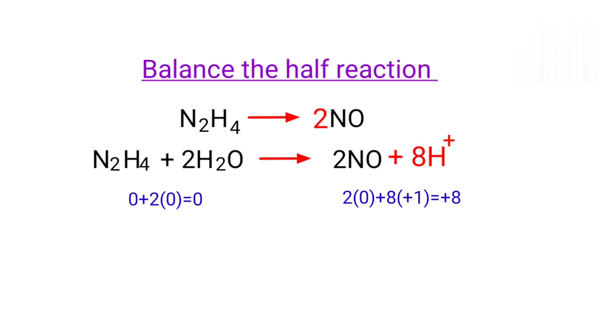So both sides are not equal. To make them equal, you should add electrons as you can't add protons. So if you think of adding eight protons to left side to make it equal to plus eight, it is wrong. But you can add eight electrons to right side to make it equal to zero.